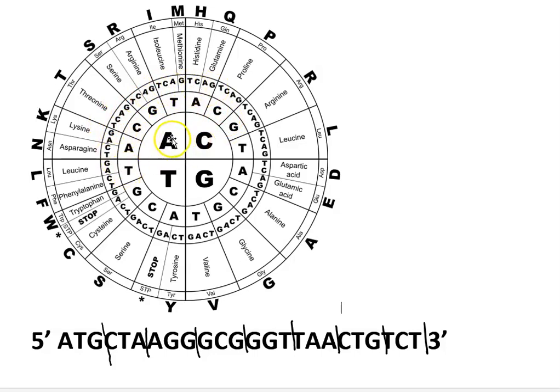So we've got an A here in the first position, a T in the second position here and a G here in the third position and that gives us the amino acid methionine. So let's write this down. That gives us an M.